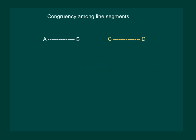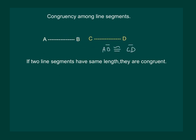Consider two line segments AB and CD. Now let us see when can two line segments be congruent. Let us try to place CD over AB. Clearly, we can see that CD covers AB with C on A and D on B. Hence, the line segments AB and CD are congruent. We can say that if two line segments have same length, they are congruent.